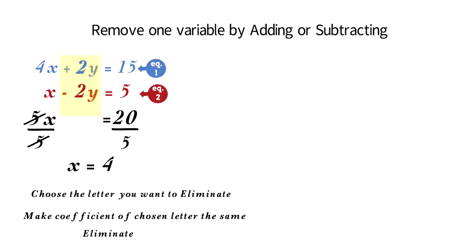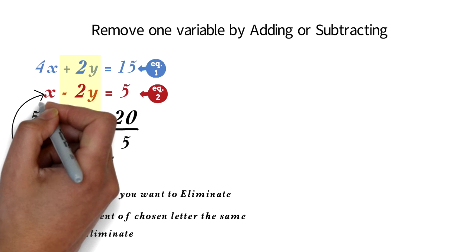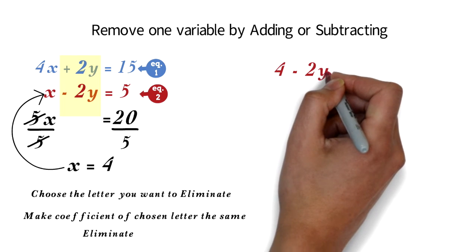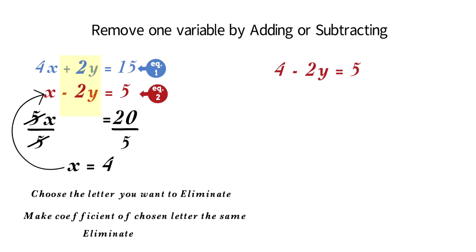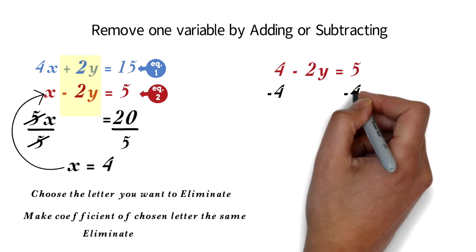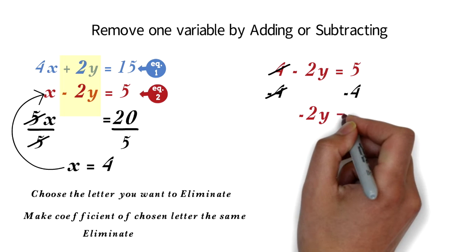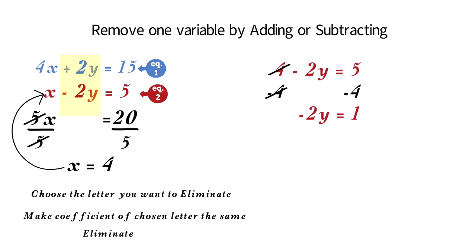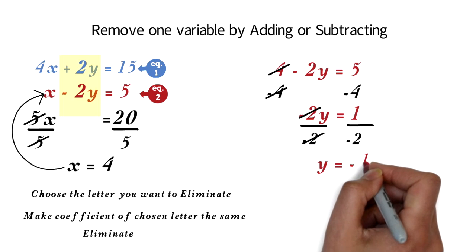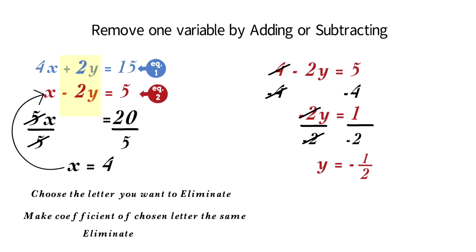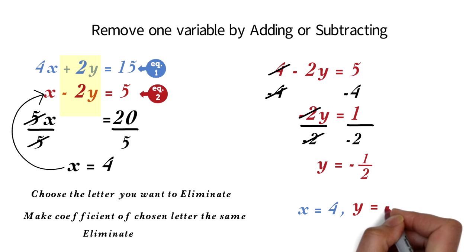Finally, we can replace x by 4 in equation 1 or 2 to solve for y. I'm using equation 2. We have 4 minus 2y equals 5. We have a two-step equation here. Subtract 4 from both sides — the 4 will cancel out, and 5 minus 4 is 1. So we have negative 2y equals 1. We divide both sides by negative 2. The negative 2 cancels out, giving y equals negative 1 over 2. So our final answer is x equals 4 and y equals negative 1 over 2.